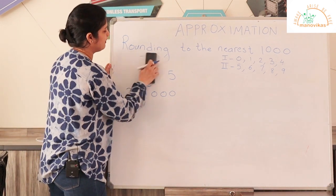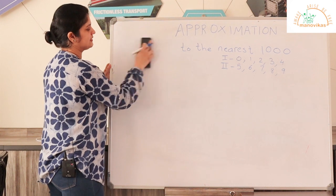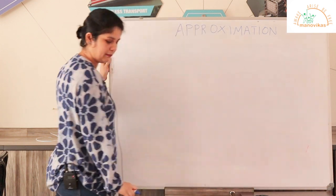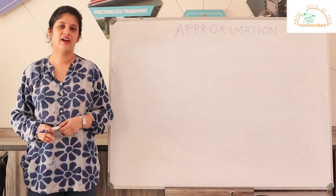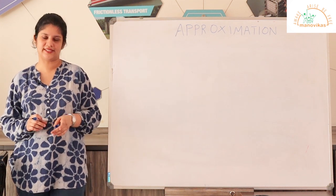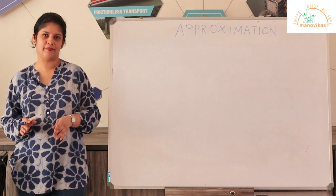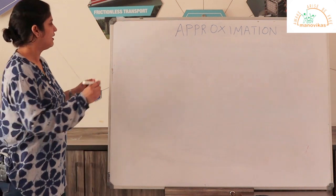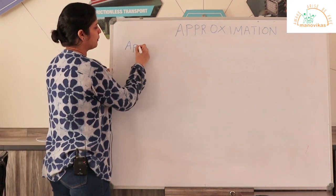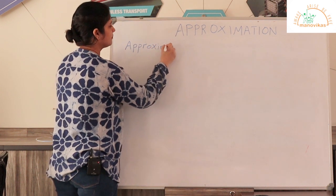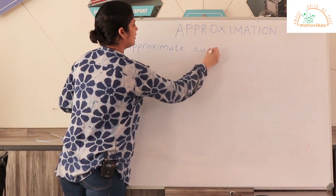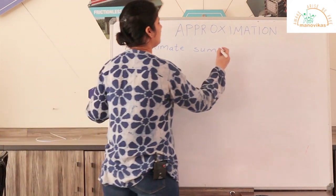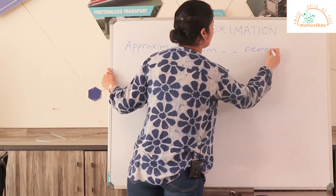Now let's move to questions 4, 5, and 6. In these questions, you are asked to find the approximate sum of two given numbers. You are given two numbers, told whether to round to the nearest ten, hundred, or thousand, and then find the approximate sum. Approximate sum means a rounded up sum. Sometimes the word estimate is also used in place of approximate. Let us take an example where we are asked to round to the nearest hundred.